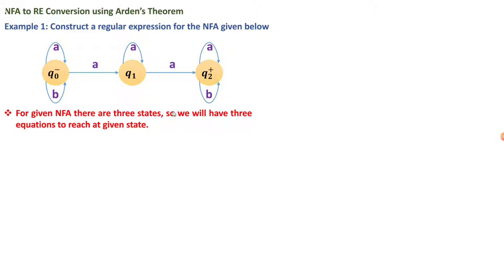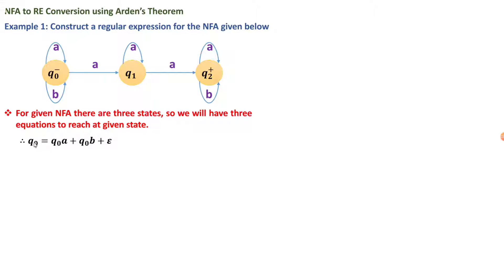For the given NFA there are three states — q0, q1, q2 — so we will have three equations. These equations are derived based on the transitions that lead to each particular state. For state q0, there is an incoming edge from q0 on reading 'a', meaning from q0 reading 'a' takes you back to q0.